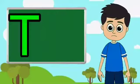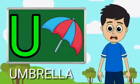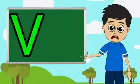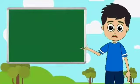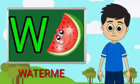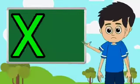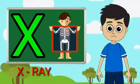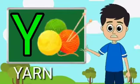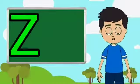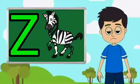U for umbrella, E for band, W for watermelon, X for extra, Y for yarn, J for jayvra.